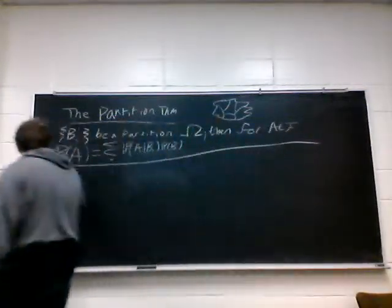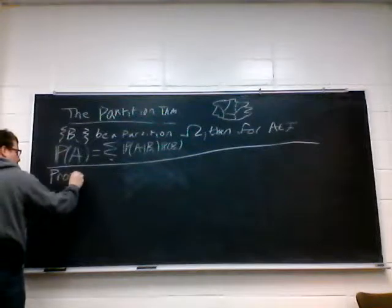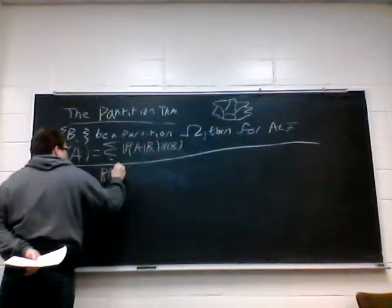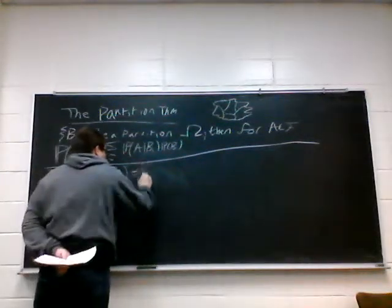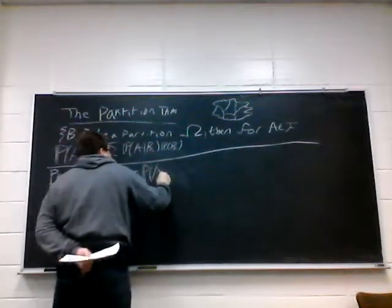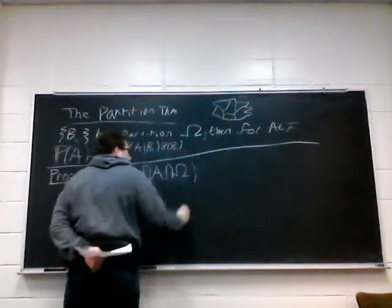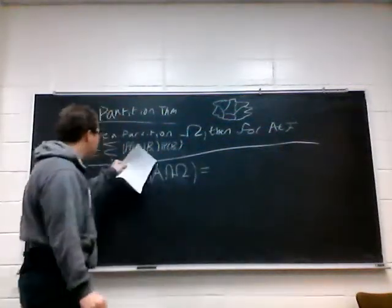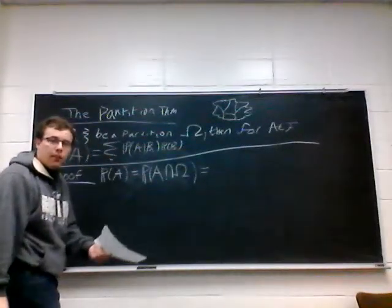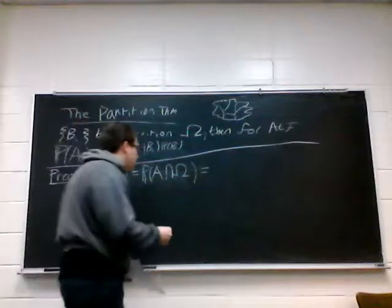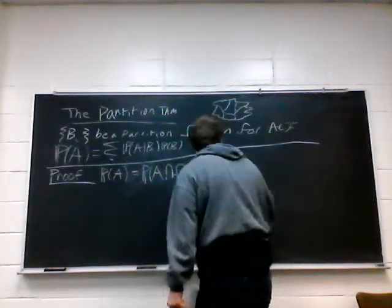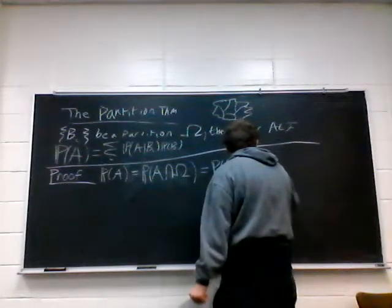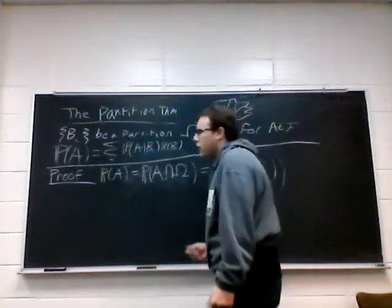Let's prove it. We know the probability of A is equal to the probability of A intersect Ω. And since the union of the V_i's equals Ω, this is equal to the probability of A intersect the union of the V_i's.